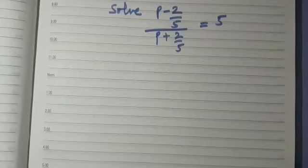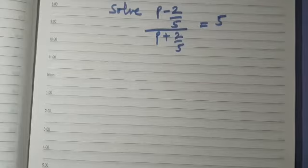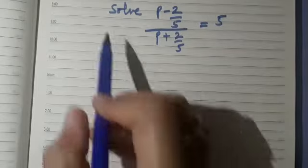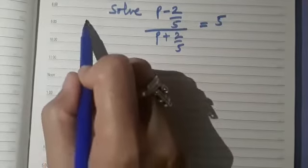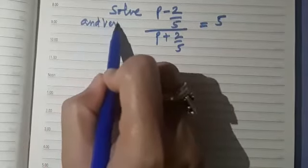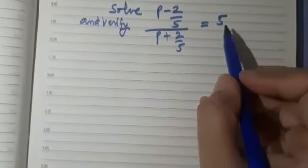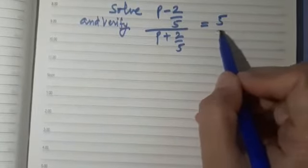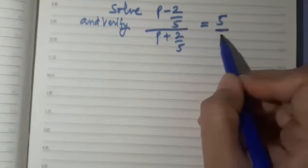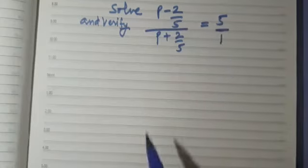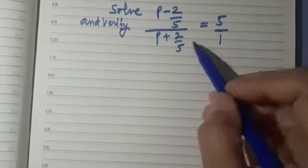Let us solve this question: (p minus 2/5) upon (p plus 2/5) is equal to 5. We have to solve and verify the answer. On the right side we can write it as 5 upon 1, and now we are going to use the method of cross multiplication.